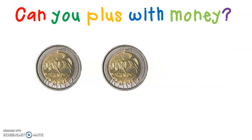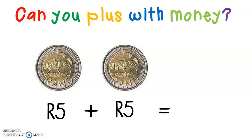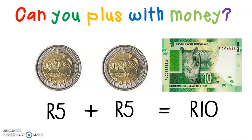5 Rand and a 5 Rand — let's do a sum. 5 Rand plus 5 Rand equals 10 Rand. Can you remember what a 10 Rand note looks like? There we go. So a 10 Rand note is divided into 2 5 Rand coins, and 2 5 Rand coins put together makes a 10 Rand note.